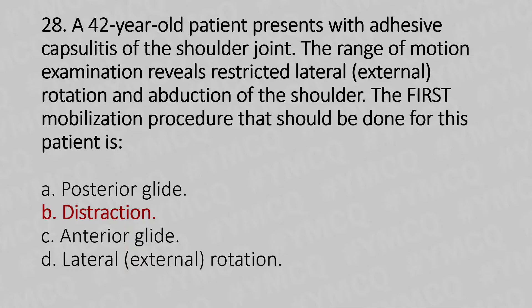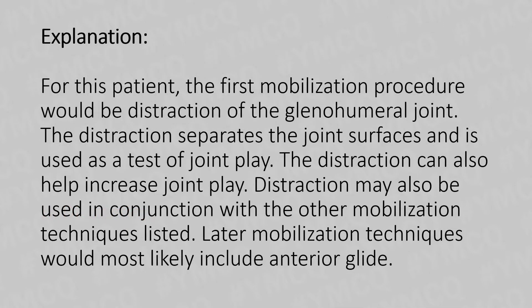Explanation: For this patient, the first mobilization procedure would be distraction of the glenohumeral joint. Distraction separates the joint surface and is used as a test of joint play. It can also help increase joint play and may be used in conjunction with other mobilization techniques. Later mobilization techniques would most likely be included as well.